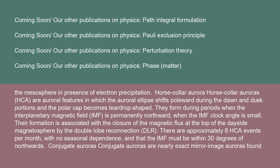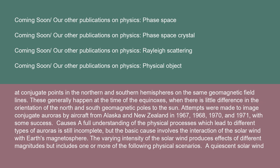There are approximately eight HCA events per month with no seasonal dependence, requiring the IMF to be within 30 degrees of northward. Conjugate auroras are nearly exact mirror image auroras found at conjugate points in the northern and southern hemispheres on the same geomagnetic field lines. These generally happen at the time of the equinoxes. Attempts were made to image conjugate auroras by aircraft from Alaska and New Zealand in 1967, 1968, 1970, and 1971, with some success.